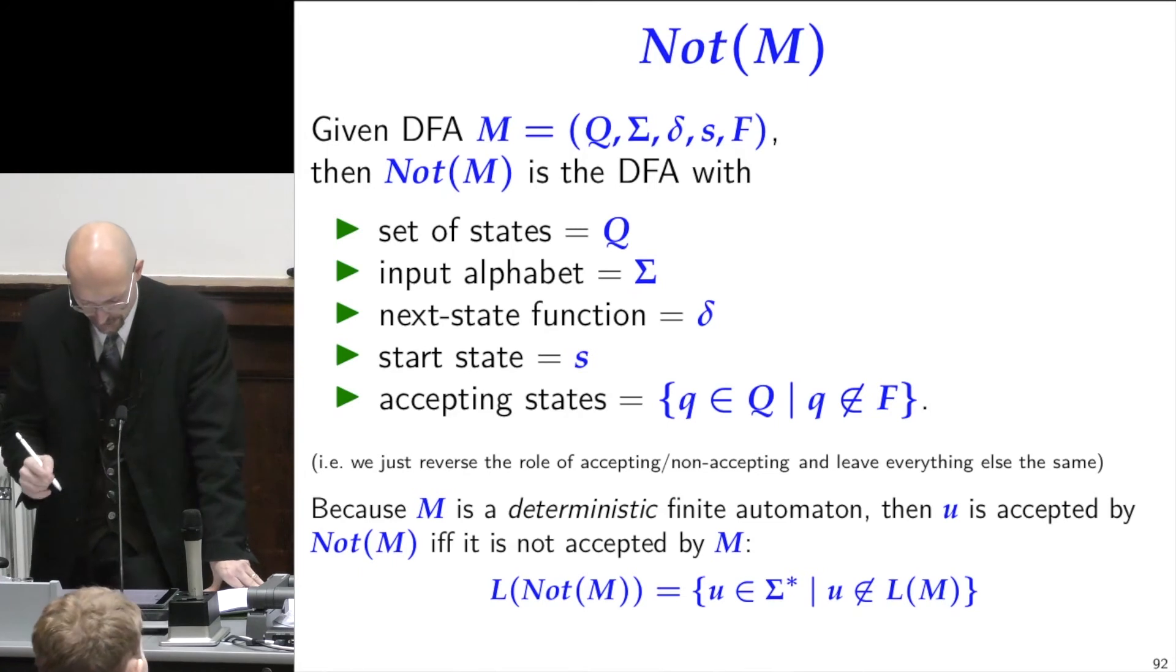This is a slide that tells you how to make NOT M. It just keeps everything the same and you exchange the accepting and non-accepting states.